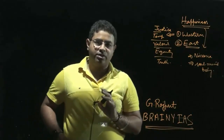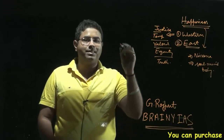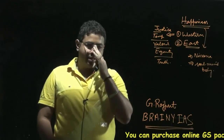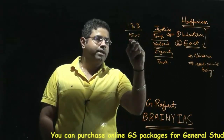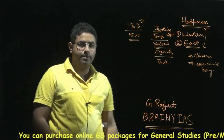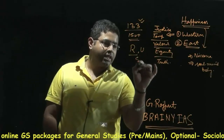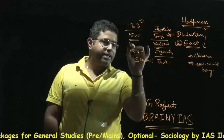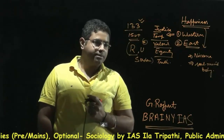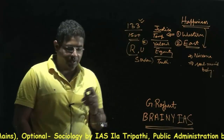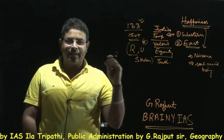Now we will discuss the United Nations' recently released index. One very important concern is that India has ranked low — India's ranking is 133 out of 150 plus countries. At the bottom we have countries like Rwanda, Uganda, and Sudan, and India's ranking is not much above these African countries like Sudan, Rwanda, Uganda, and Nicaragua.